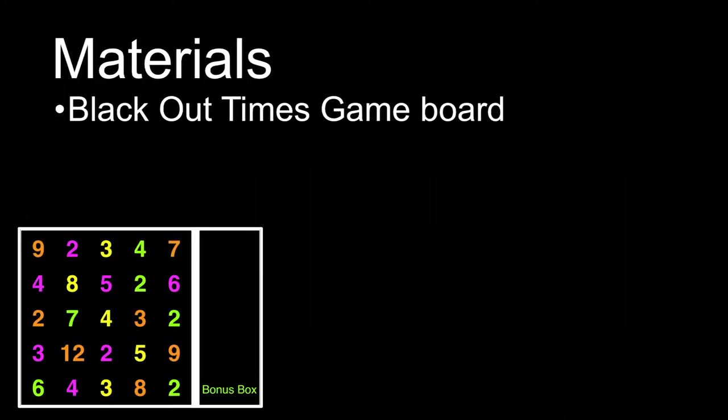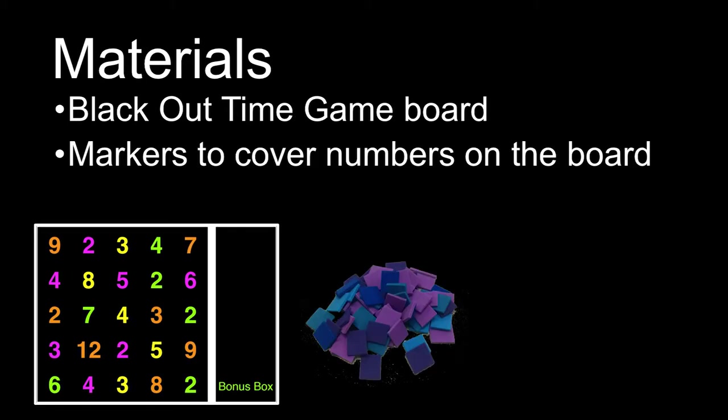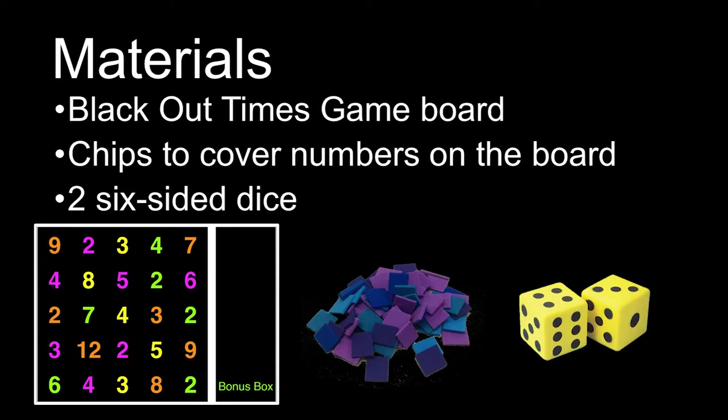First you will need to set up the game board and pieces. Cut out the Blackout Times game boards. Each player chooses a game board and a handful of chips. Place the dice in the center of the playing surface.